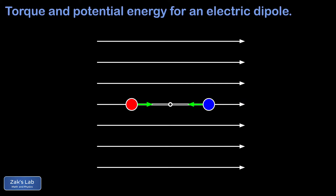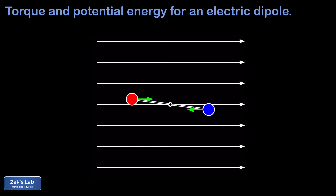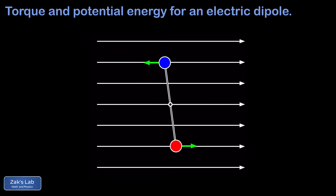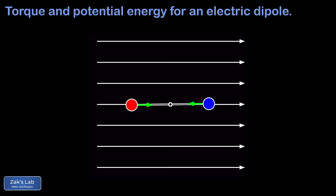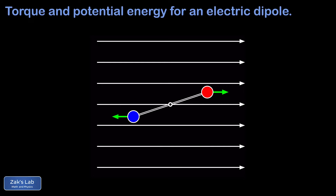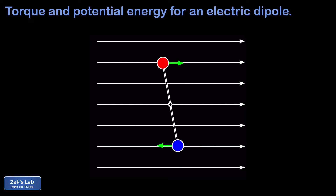Secondly, there's a potential energy associated with the orientation of a dipole in an electric field, because if we release it from rest it can spontaneously give us rotational kinetic energy as a result of this torque. In the animation we're showing how it speeds up if released from rest near the unstable equilibrium point, reaches maximum speed at stable equilibrium, then continues to oscillate with an ongoing exchange between potential and kinetic energy.